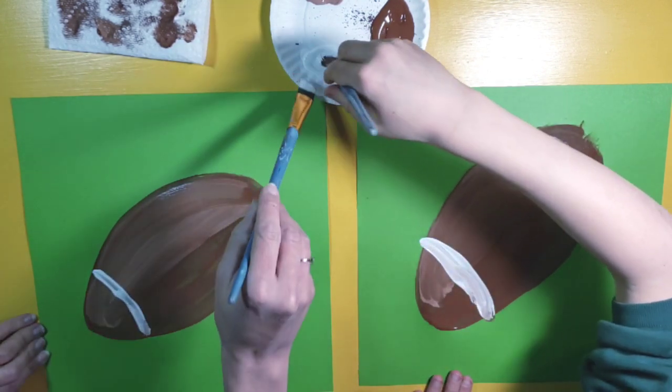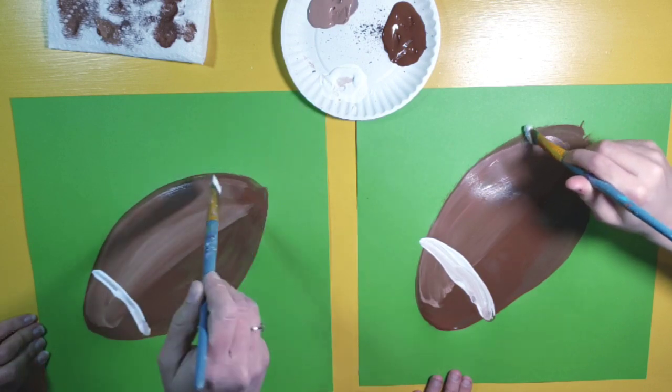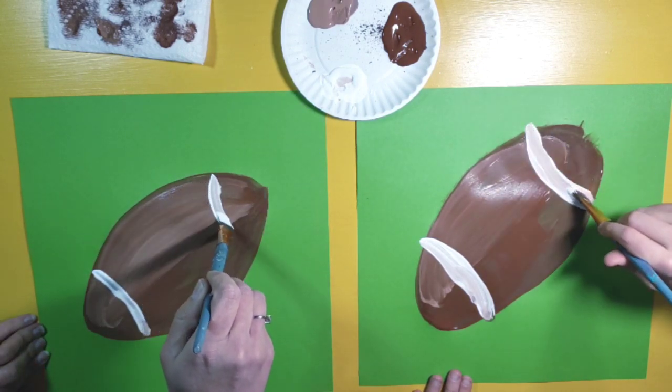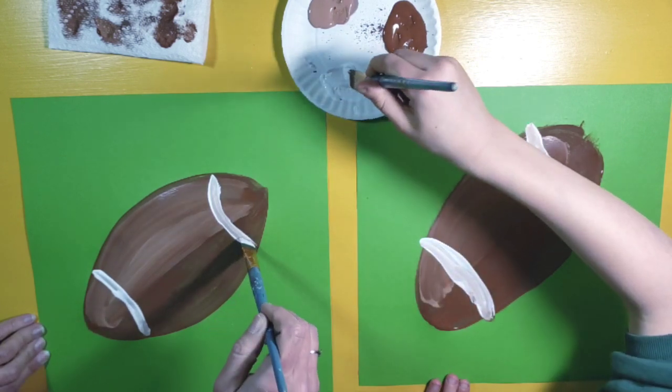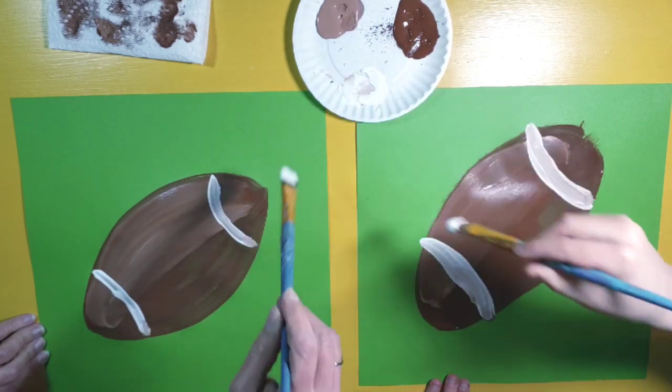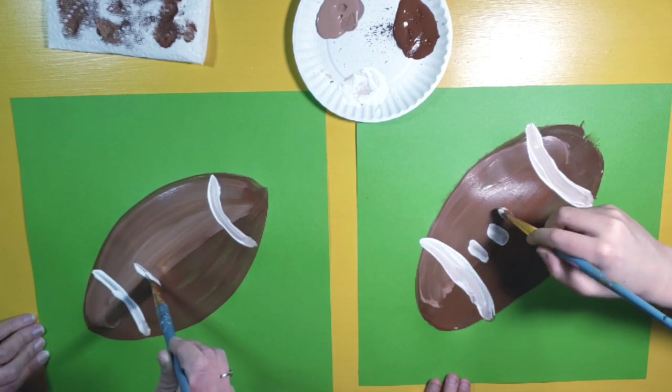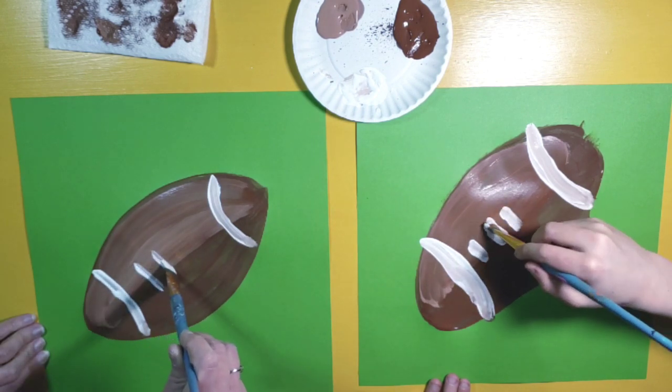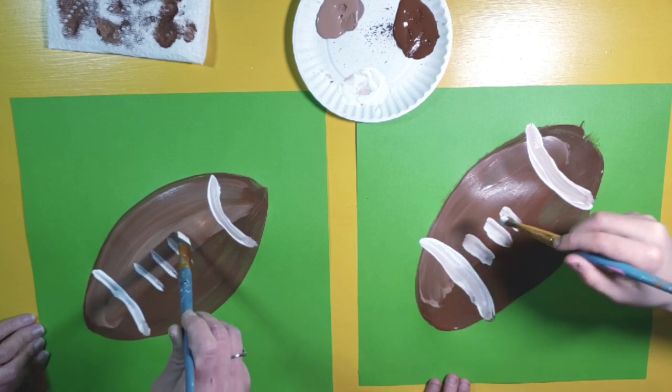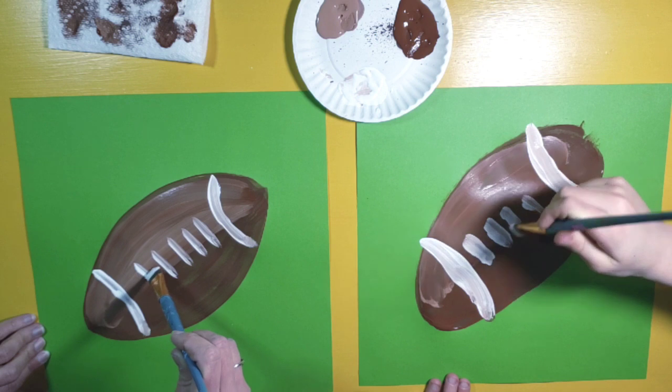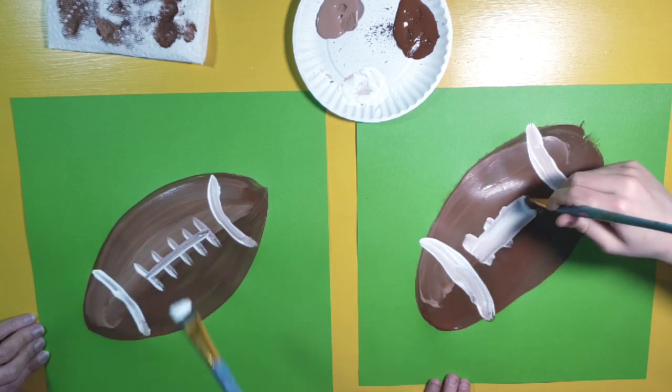And then I'm going to add another stripe on the other side of my football the same way. And then brush it down. And then I'm going to add the marks in the middle of the football. I'm just doing some nice lines. One, two, three, four, five. And we'll connect those with the white as well.